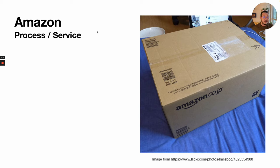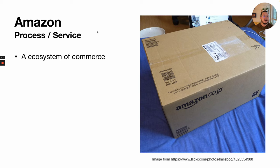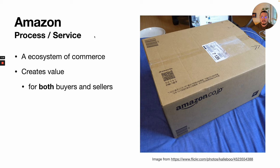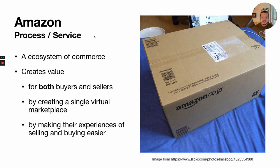A third very different example is Amazon. Amazon is a process, a system, a service — really an ecosystem of commerce built on top of technology. It creates value for both buyers and sellers by creating a single virtual marketplace and making the experiences of selling and buying easier. The iPhone, blockchain, and Amazon are very different types of innovations.